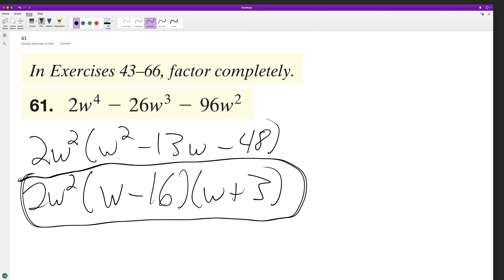Let's go ahead and test it out. So we'll end up with 2w squared. So we'll have w squared plus 3w minus 16w minus 48. Multiply through, first combine this, 2w to the fourth minus 26w cubed minus 96w squared. So that proves that this is correct.